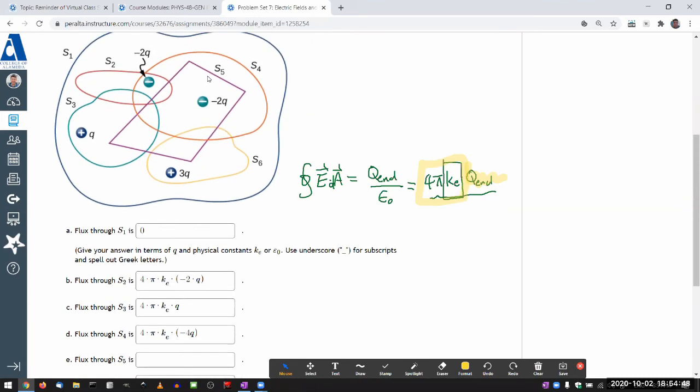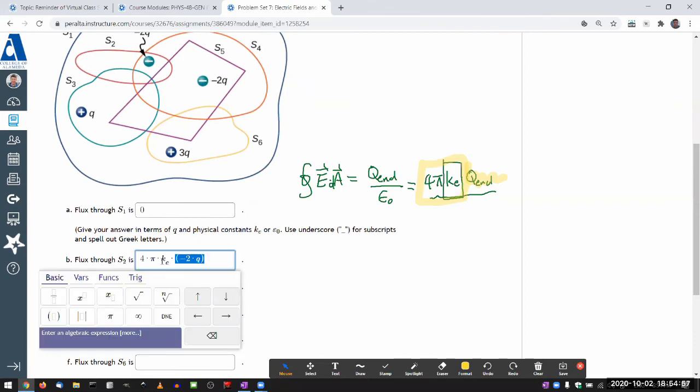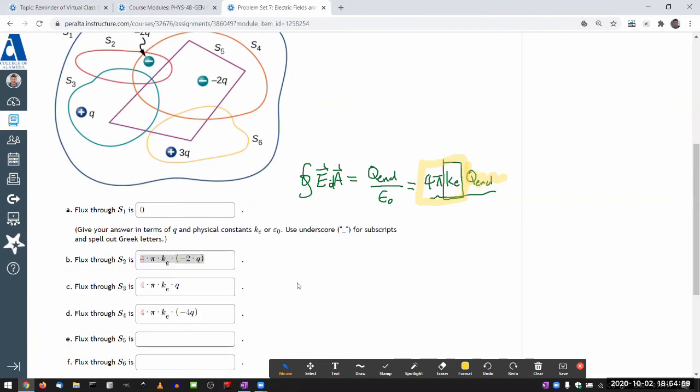Flux through S5—let's look here. That rectangle, trapezoid-looking thing encloses only one -2Q. So it's going to be the same thing as S2, just numerically speaking.